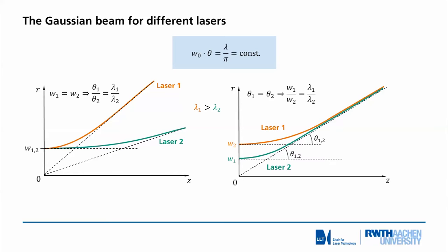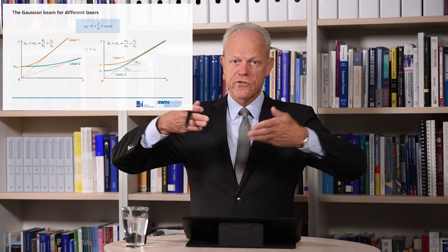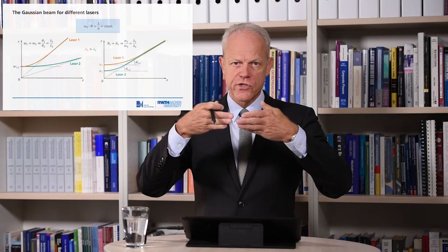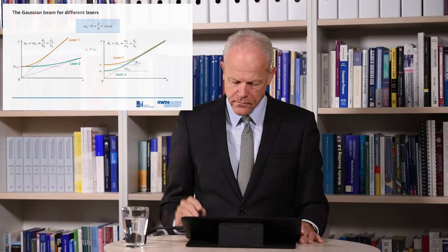So if we want small focal spots, number one, use short wavelengths for high focusability, and number two, use short focal lengths for high focusing and high divergence in order to get small spot sizes.